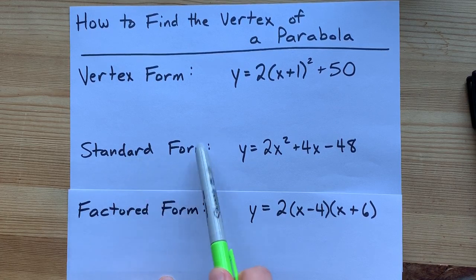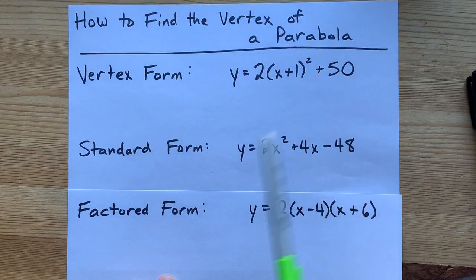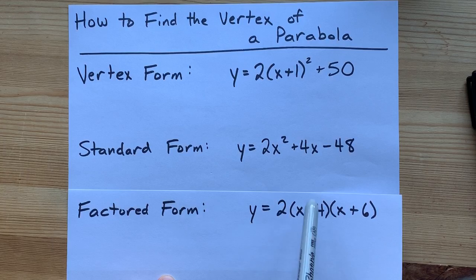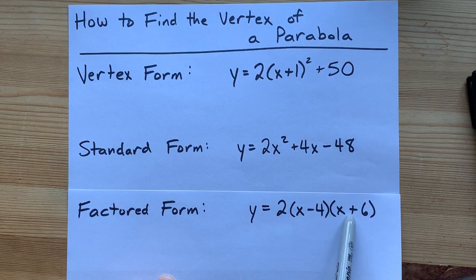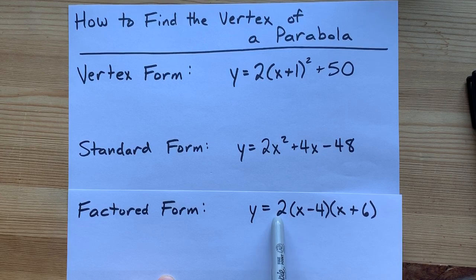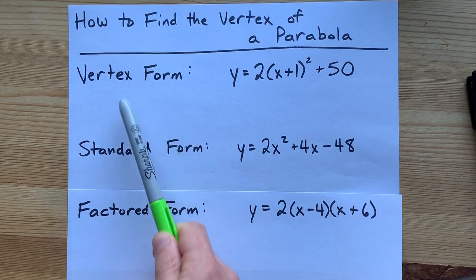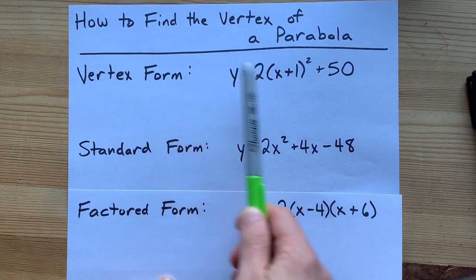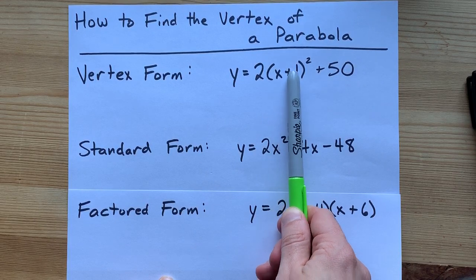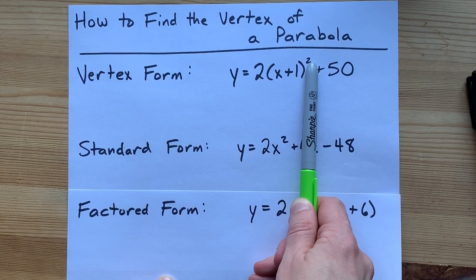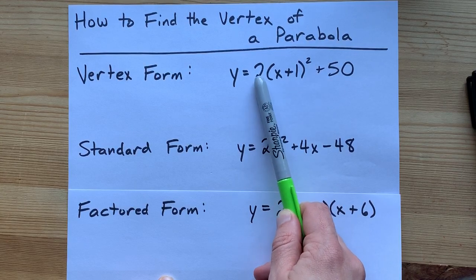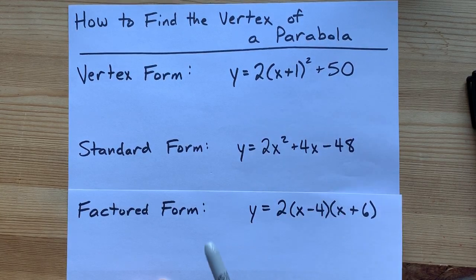There's standard form, which has no brackets at all. Factored form, which often has two sets of brackets multiplied by each other, and sometimes there's an extra number out front. And there's vertex form, which has the x with something added or subtracted, then that's all squared. There's often a number out front and something added or subtracted from the end.